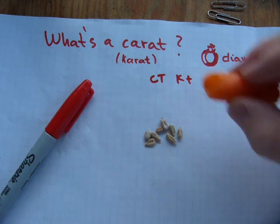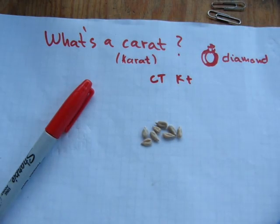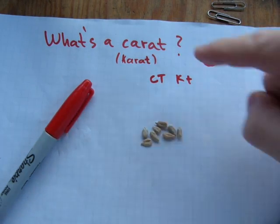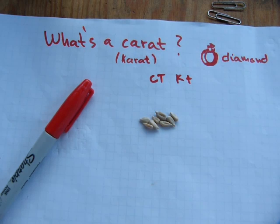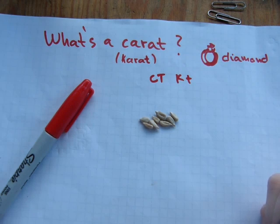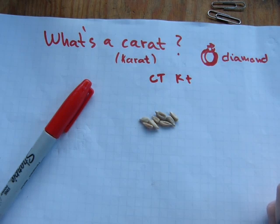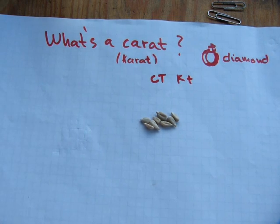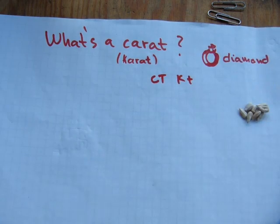The carat has nothing to do with the carrot garden vegetable. The word carat has to do with carob seeds. These seeds are usually pretty uniform, and in trading, these seeds were used for measuring things. Not anymore — not precise enough.